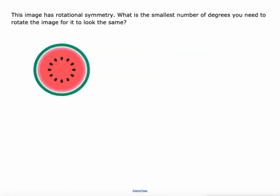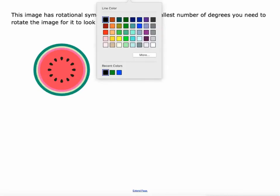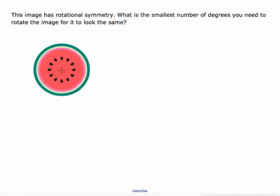This image has rotational symmetry. What's the smallest number of degrees you need to rotate the image for it to look the same? All right, so here's what I'm going to do. I think each time that I run a line through one of those seeds of the watermelon from the center to the seed, there's a section. So basically we can just count the seeds.